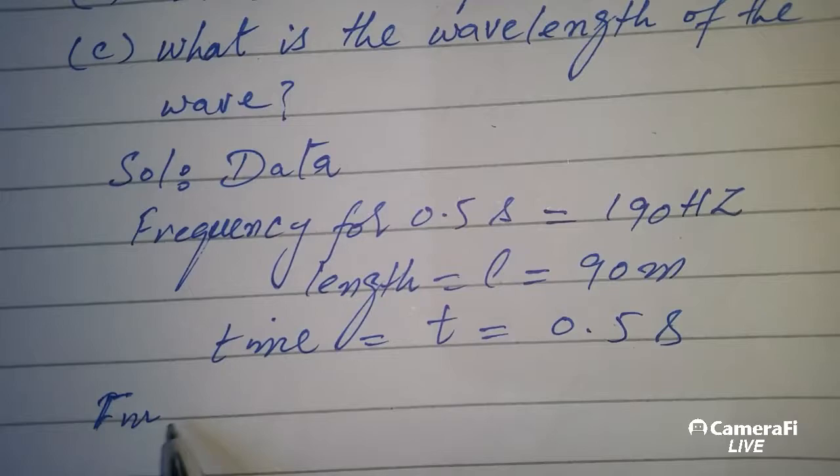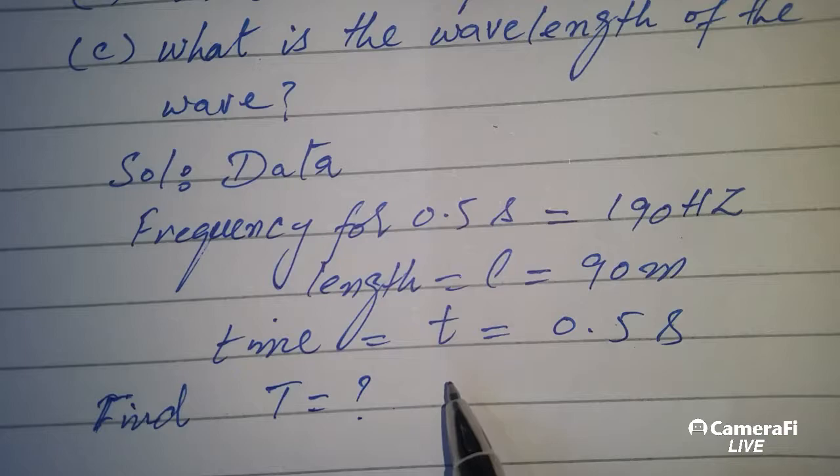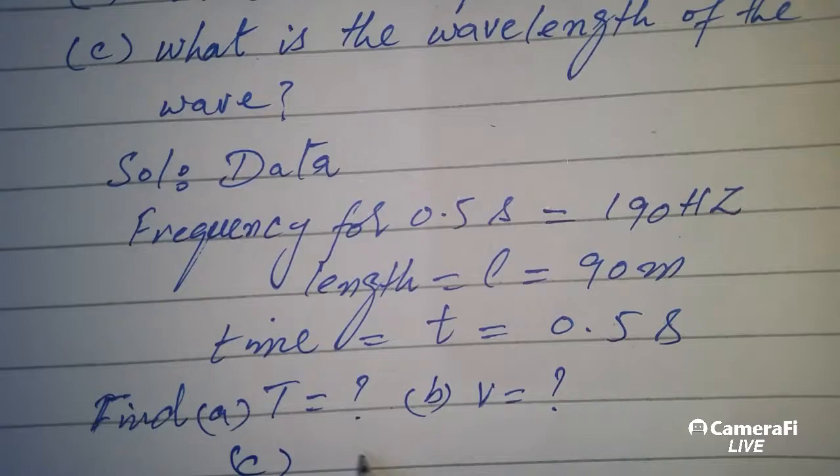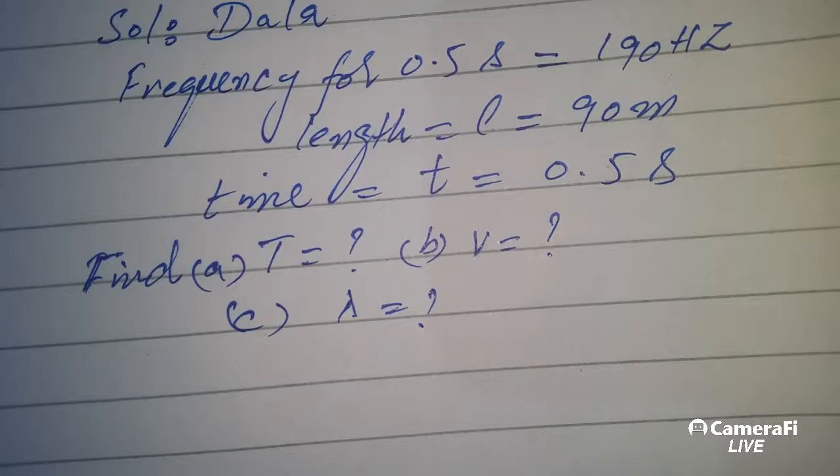To find: time period T, velocity or speed v, and wavelength lambda. These are the three things that we want to find.